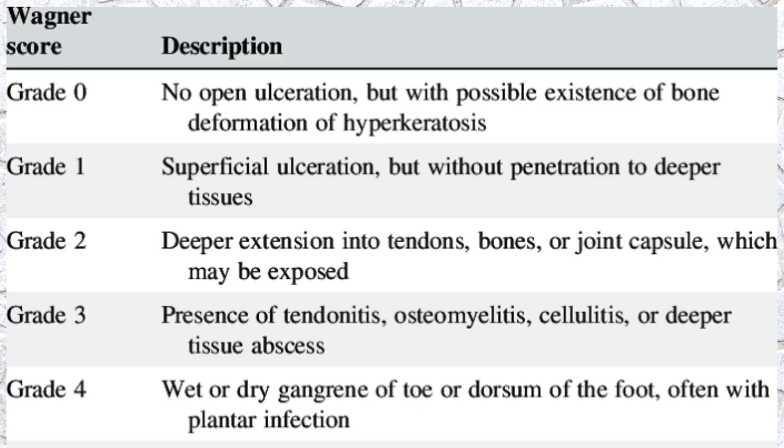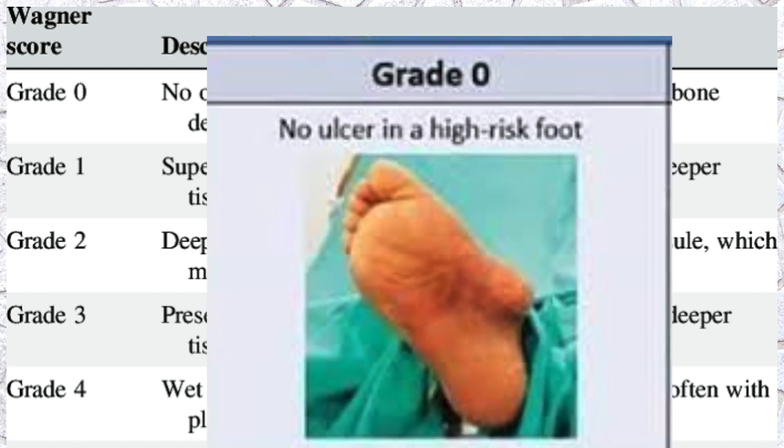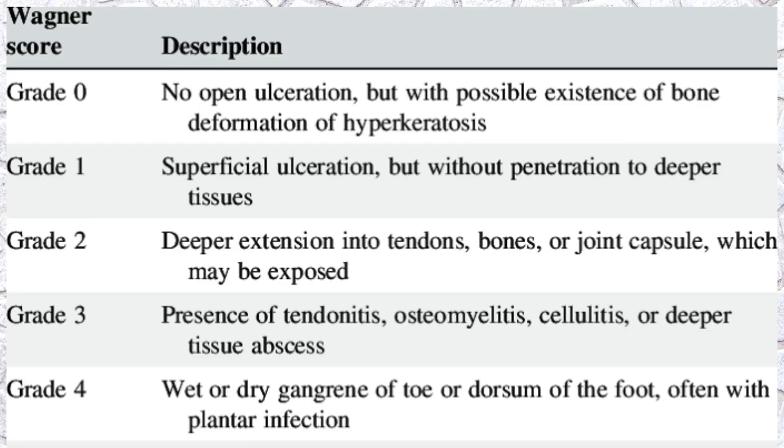Grade 0 says that there is no open ulceration, but there is possible existence of bone deformation or hyperkeratosis — meaning you will not see any laceration or cut over the skin, but there are chances you will see hyperkeratoid formation of the skin. That is what we call Grade 0.